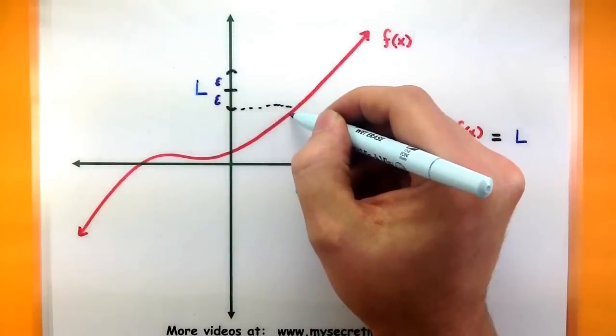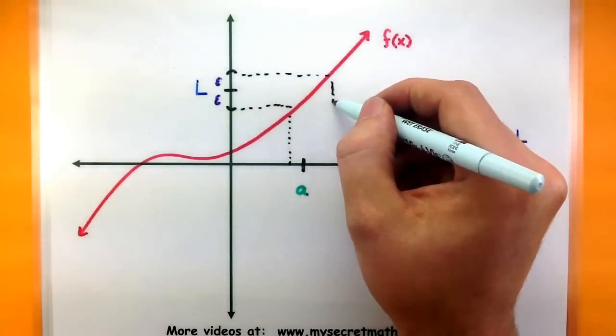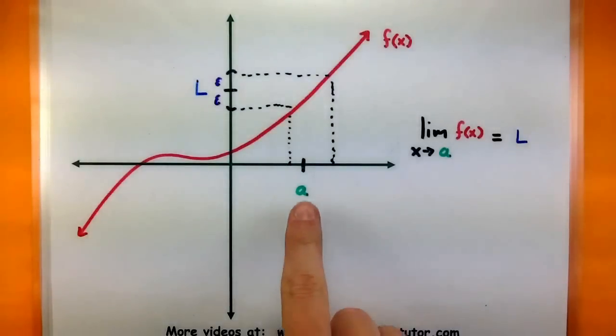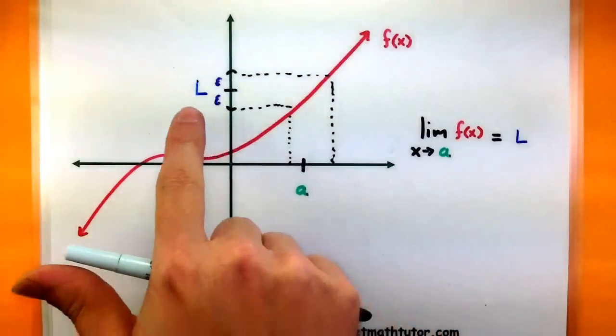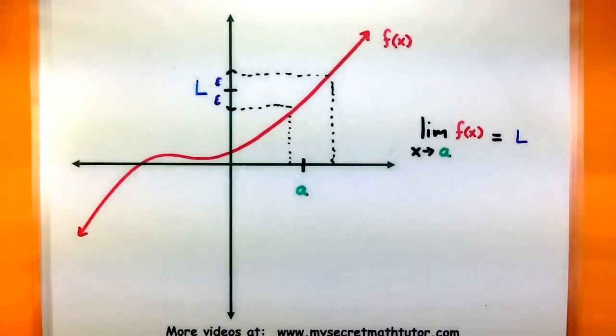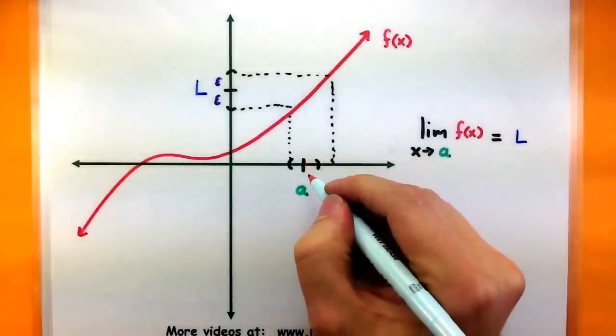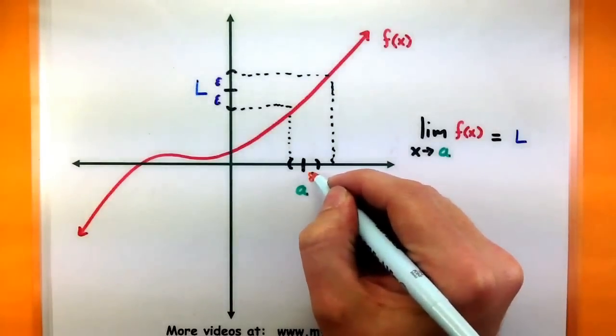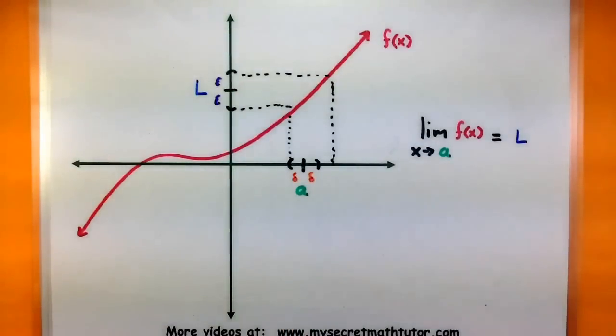Now if I really want to make sure that I end up within this threshold, I have to be really careful how I choose my values around a. From this I can see that I basically need to choose a values, or x values, within this interval to make sure that I'm within epsilon of L. So, just to make things nice and symmetric, I'll create a smaller interval and call this distance my delta. So if I want to be within epsilon of my limit L, then I need to choose things within delta of my value a.